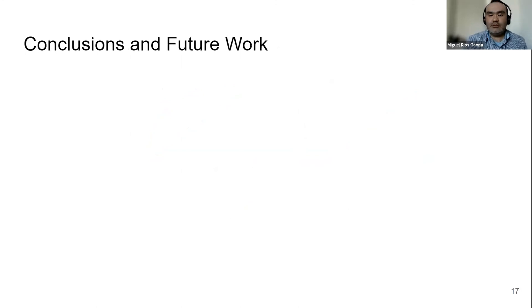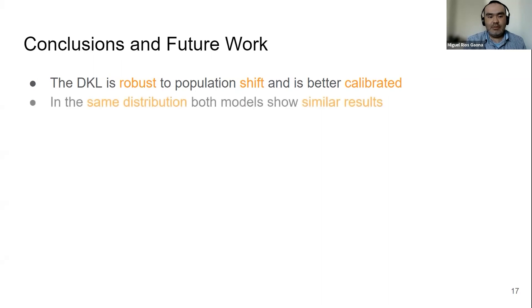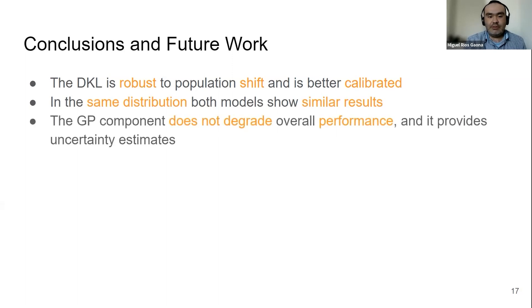So what are our conclusions and future work? The deep kernel learning is robust to population shift and is better calibrated. In the case of out of distribution, in the same distribution, both models show similar results. The GP component of the deep kernel learning does not degrade the overall performance and it provides uncertainty estimates.